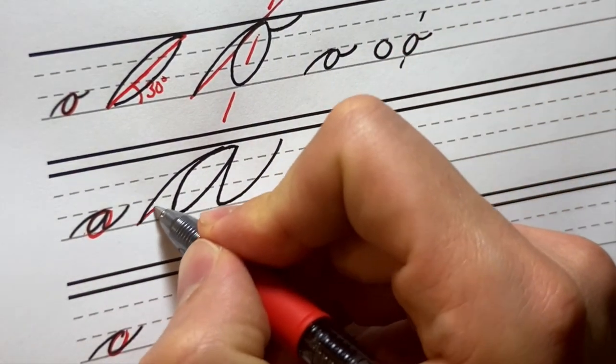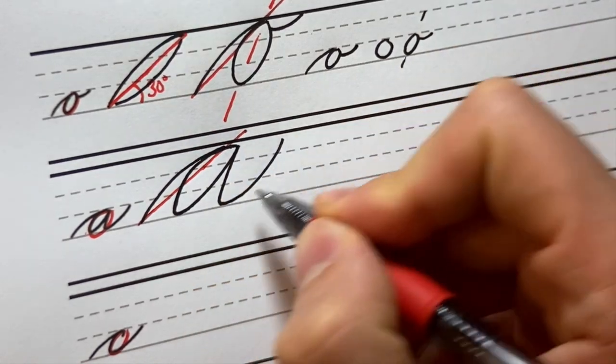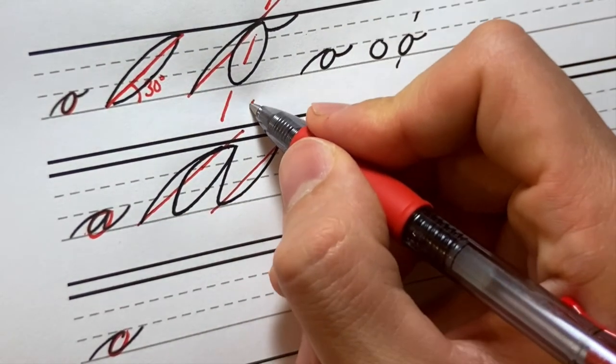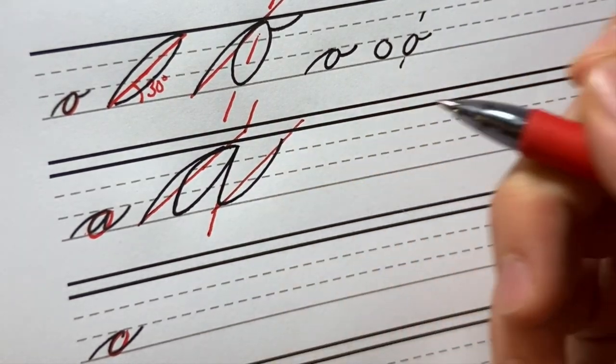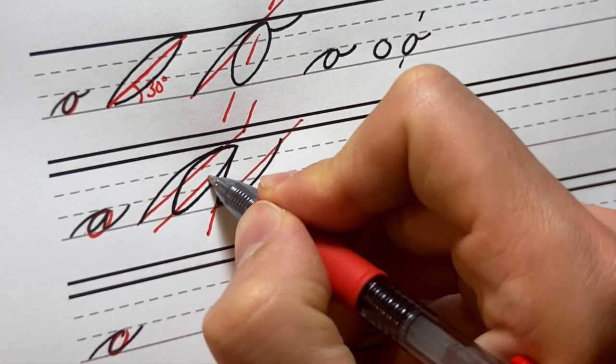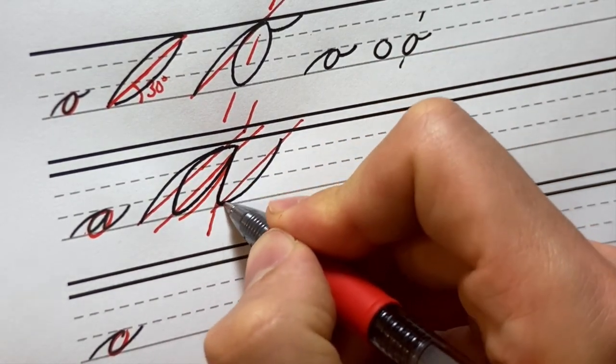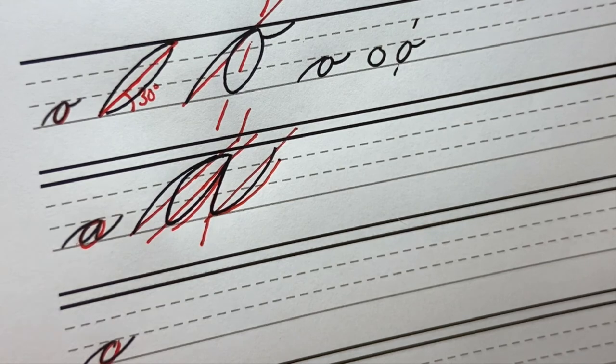Again, we have our connective slant here, our connective slant here. We want those to be about the same. We have our main slant here as well. We have our connective slant here as well. There's that I. There's that I right here.